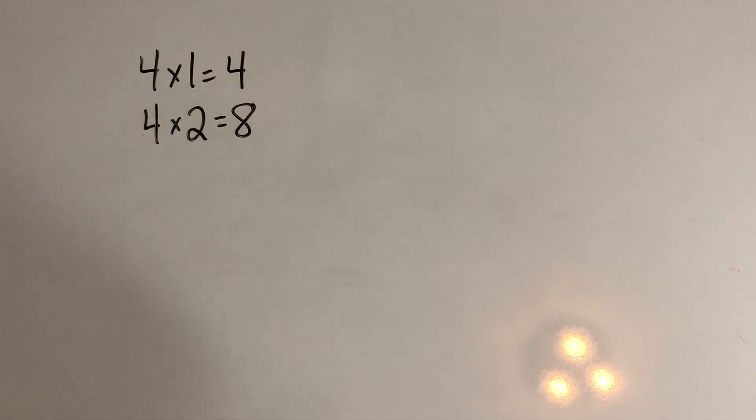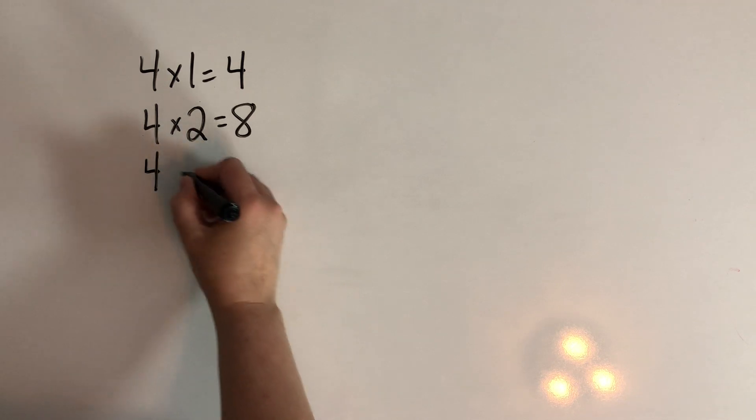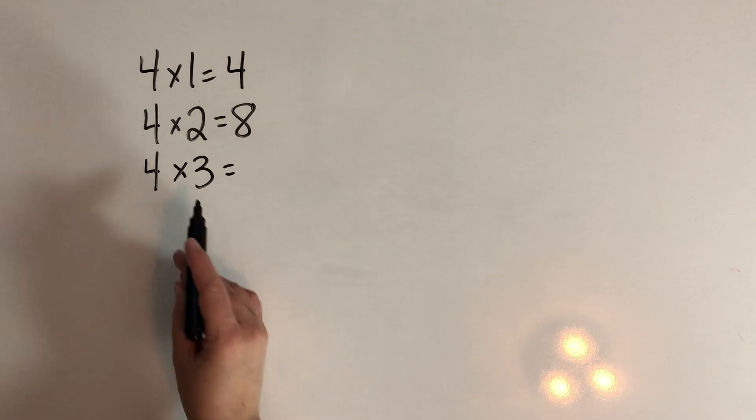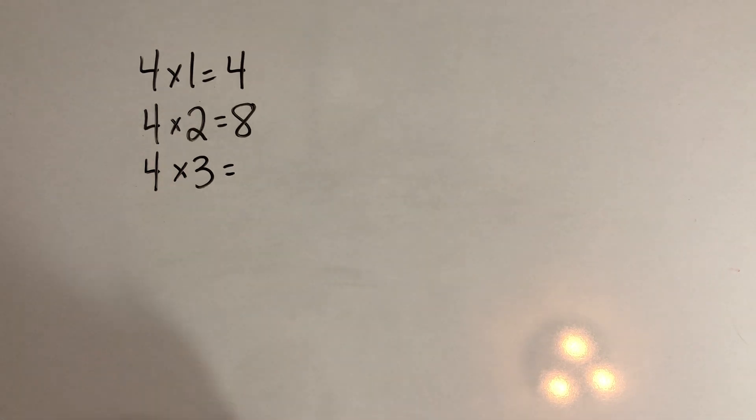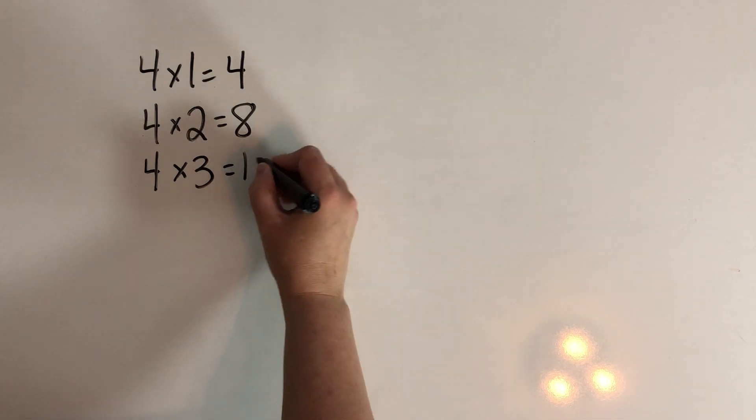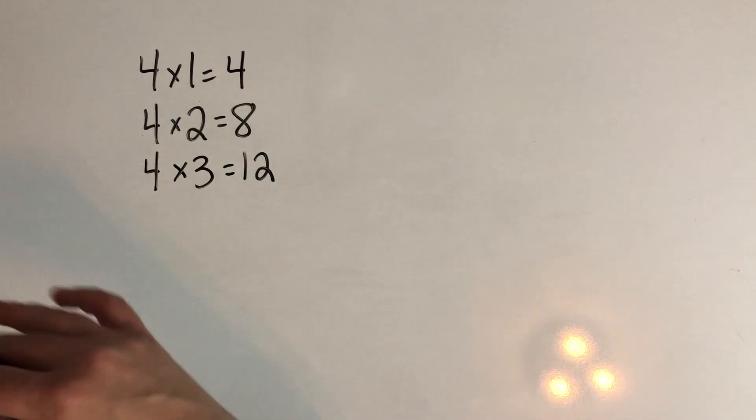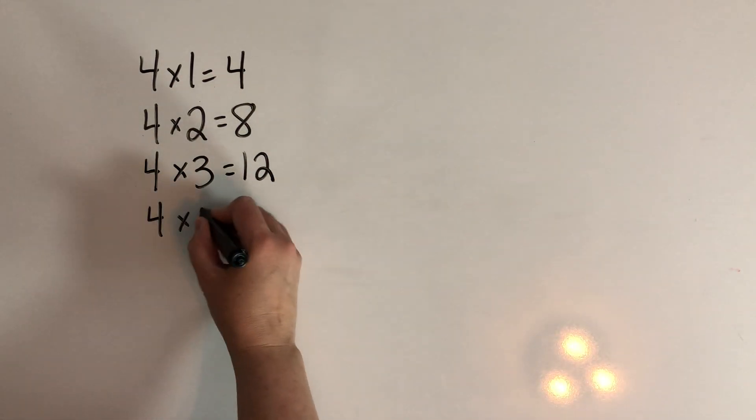Now let's start using the strategy that we just learned, the double the double strategy. Okay, so for four times three we could start in our heads with two times three and that's six, and then we'll double the six to make twelve. So we doubled the three and then we doubled again.